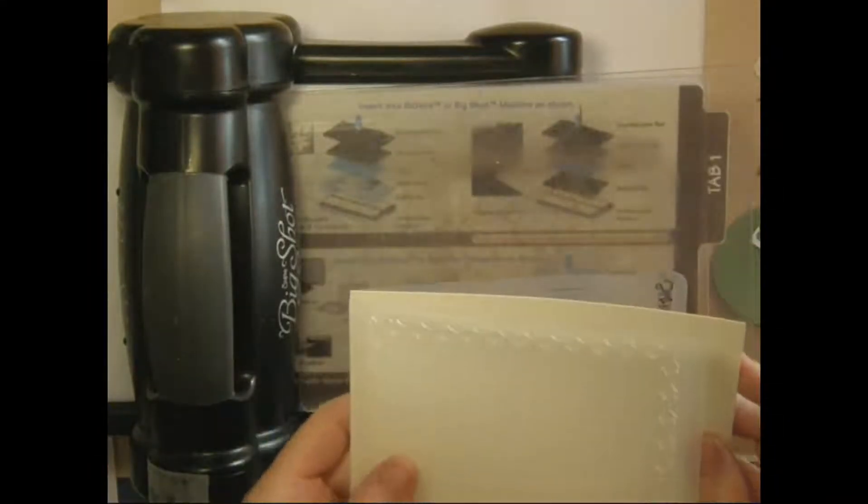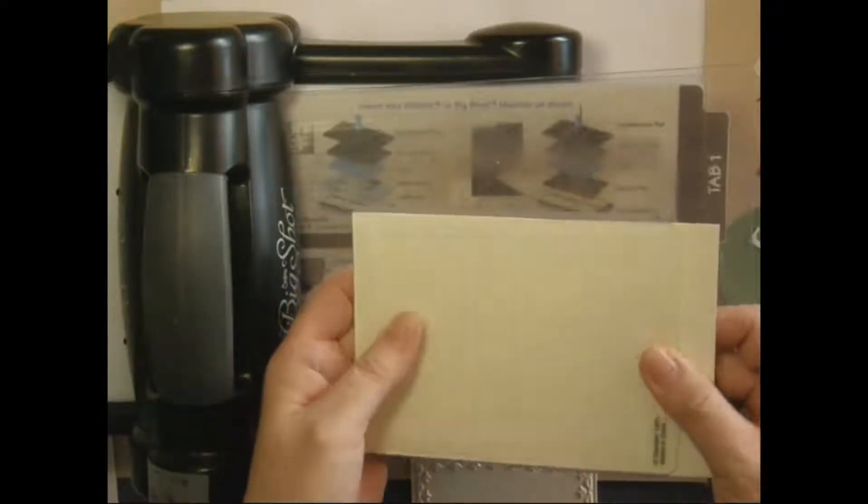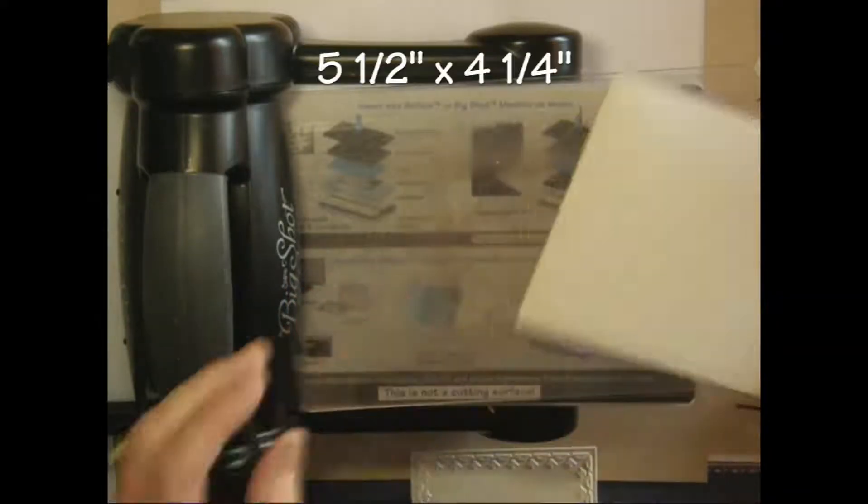Today I'm going to show you how to take the tulip embossing folder and make it into different sizes. So we start by cutting a piece of cardstock that fits the embossing folder.